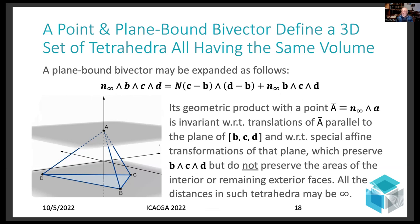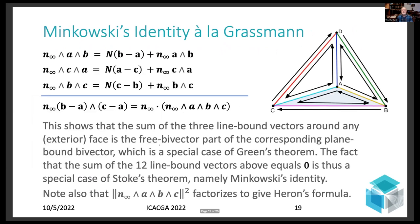So once again, in this case, all the distances can become zero somewhere in this set of a 3D set of tetrahedra having the same volume. You can also realize in this framework Minkowski's identity, and in fact this is something well known to Grassmann, that when you take the sum of the bivectors of the line-bound vectors around any face of the tetrahedron, you get the free bivector of that face. And when you sum all 12 of the indicated line-bound vectors shown here, you of course, since they come in pairs related by an overall change of sign, you get an overall zero. And that's one way to prove Minkowski's identity.